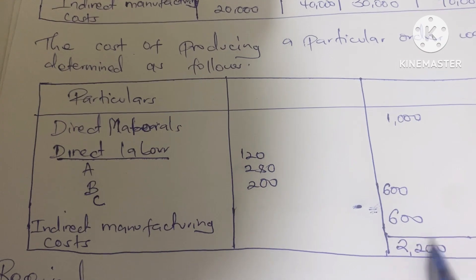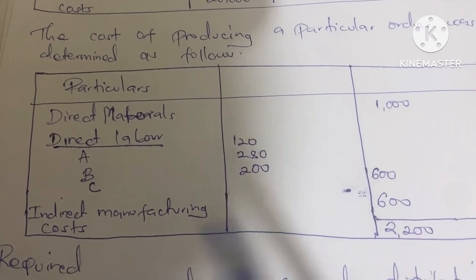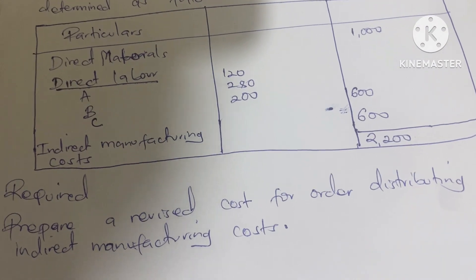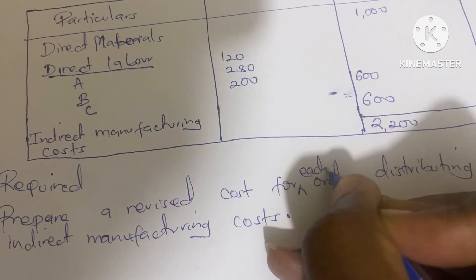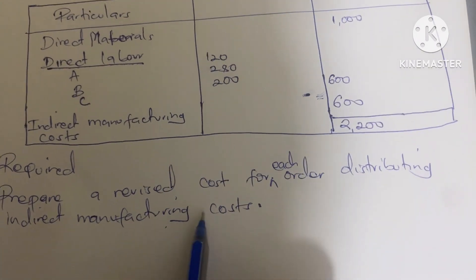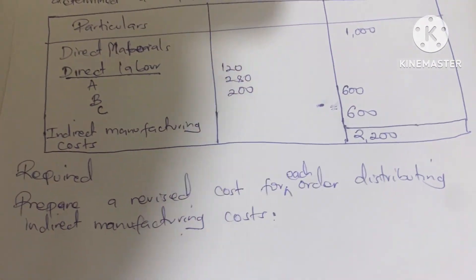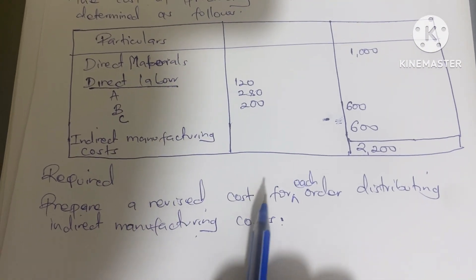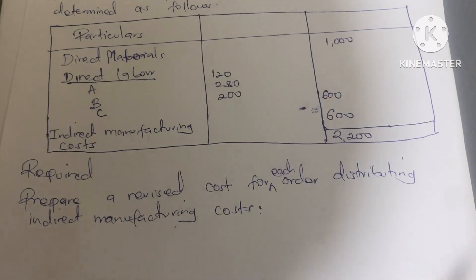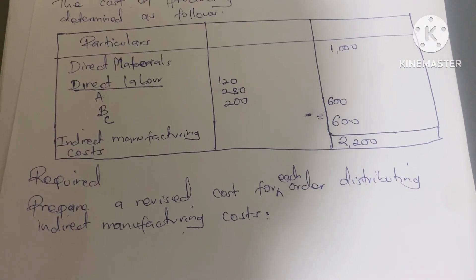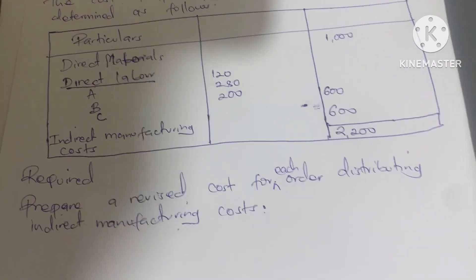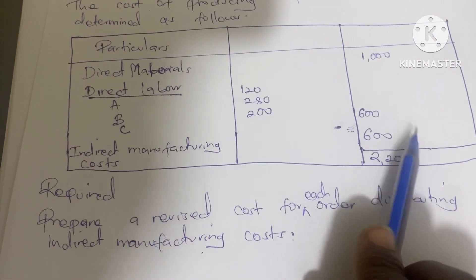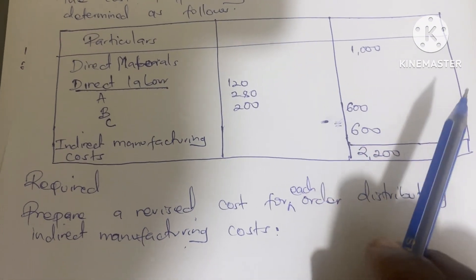When you add the direct materials, direct labor, and indirect manufacturing cost, the total cost for a particular order is given. What is required is to prepare a revised cost for each order, distributing the indirect manufacturing costs into departments A, B, and C.